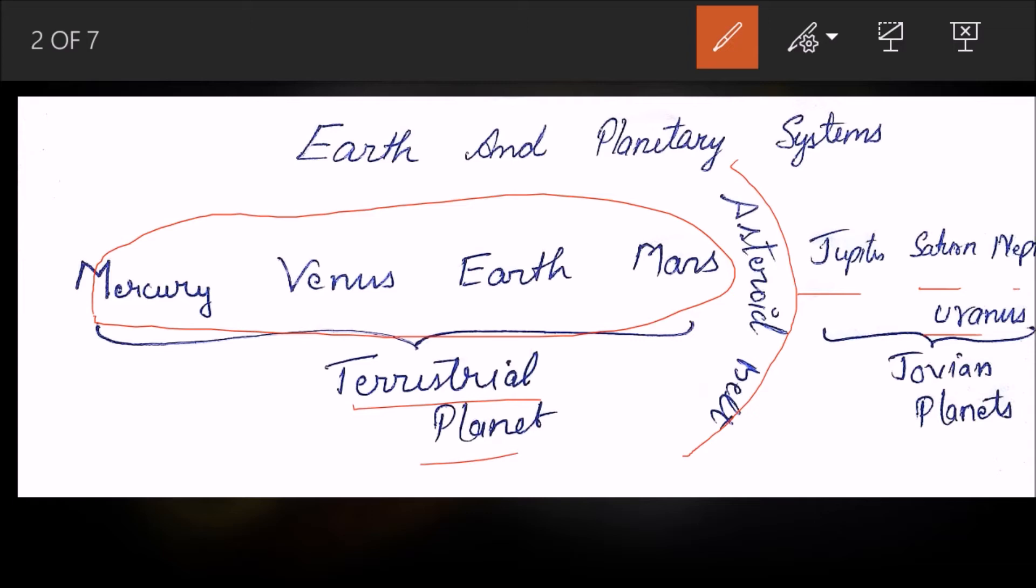These are Jovian planets. We will not look into detail, but these are all made up of gases. They are called Jovian planets because something related to Jupiter is called Jovian. This group of planets is made up of gases similar in nature to Jupiter.